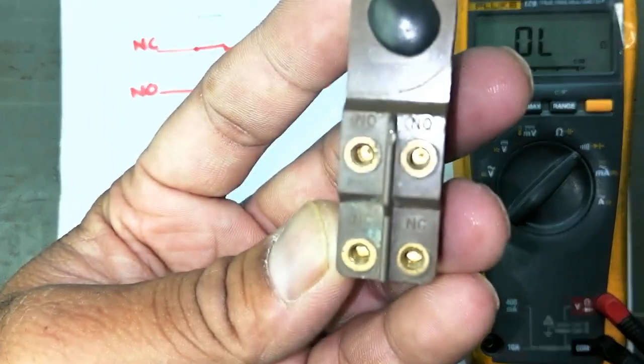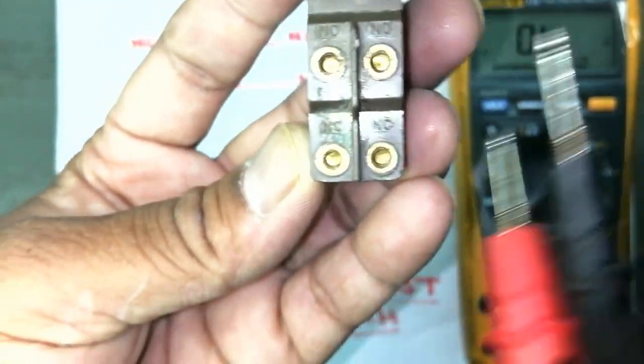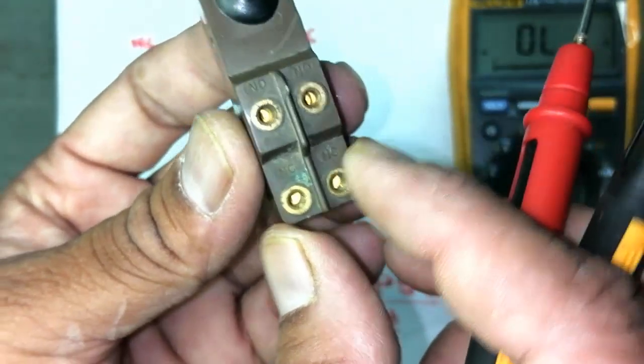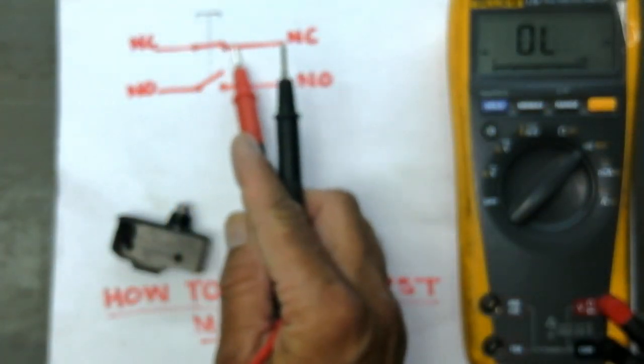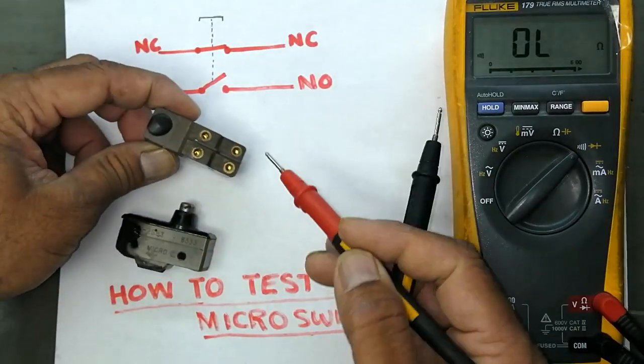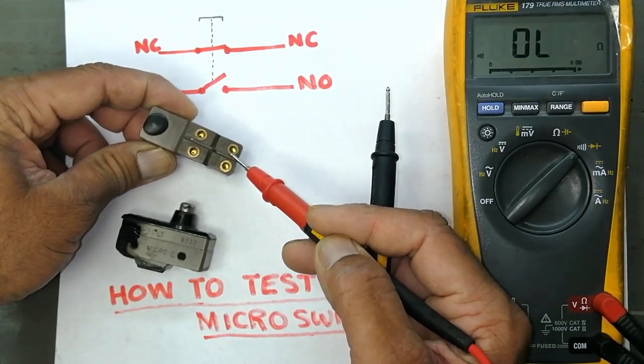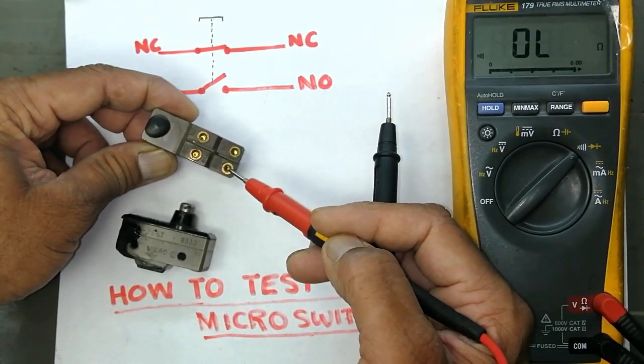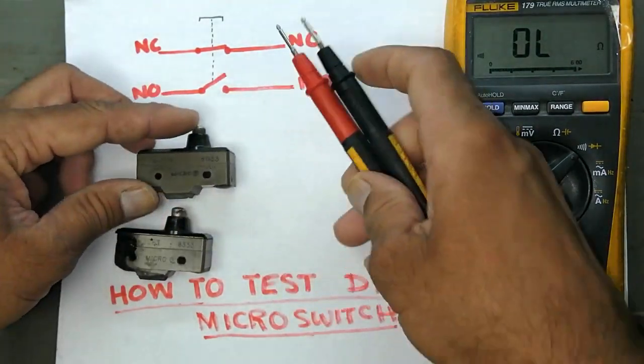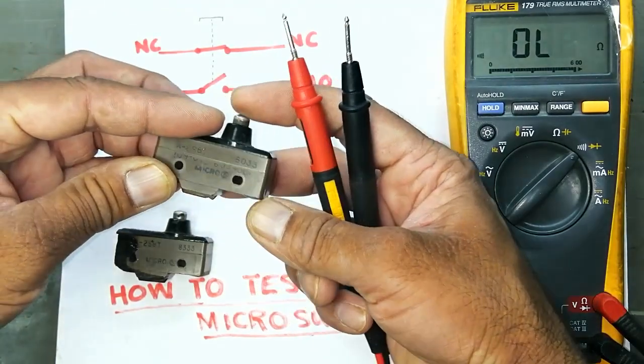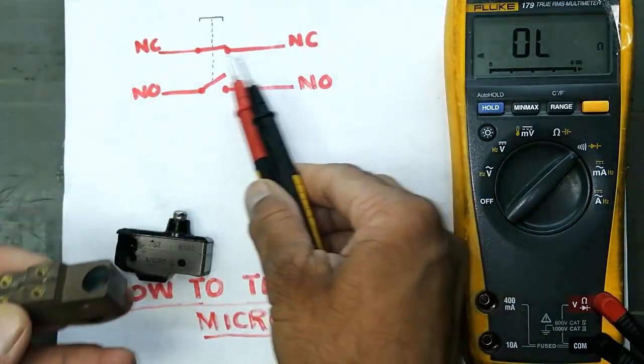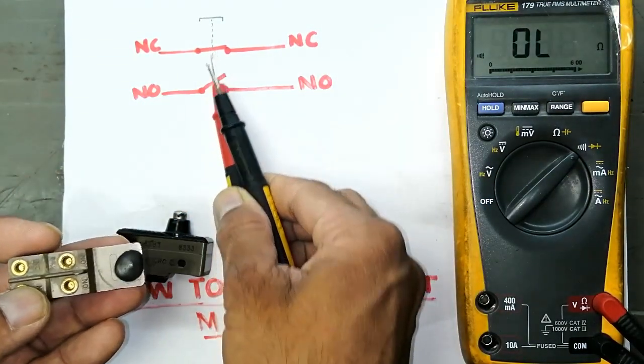NO and NC - these are normally closed. When this switch is in this condition, these two points are closed. This point is closed with this one, so this point and this point are closed contact, NC normally closed. When we press this button like this, it is a sensor switch. Then this will open and this will close.